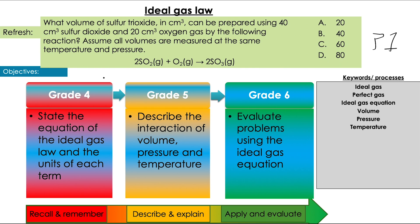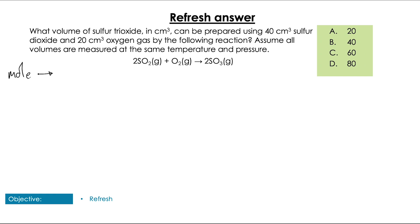Right, let's have a little look through that. So remember with our paper one questions, there's always going to be a shortcut, hopefully anyway. We've got 40 centimetres cubed of sulphur dioxide multiplied by 2 over 2 would give us 40 centimetres cubed of sulphur trioxide. But if we also use the oxygen, we see that we would get the same because neither in this case is the limiting reactant. So the answer is B, whichever way you end up looking at it.